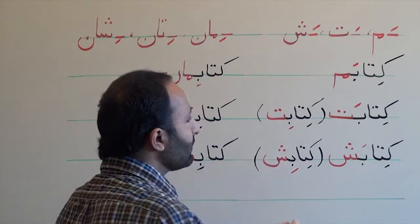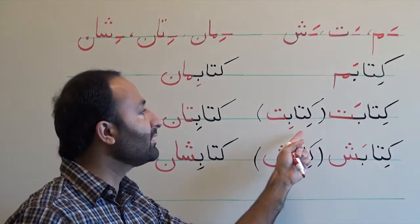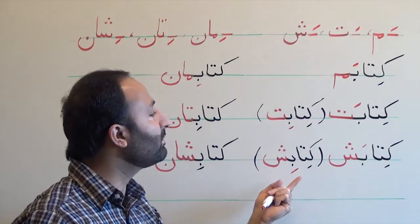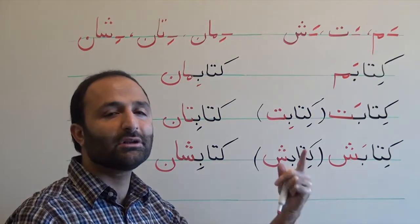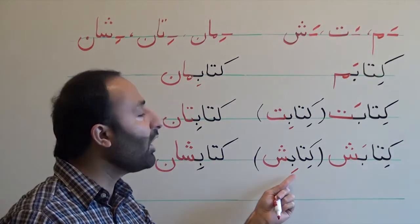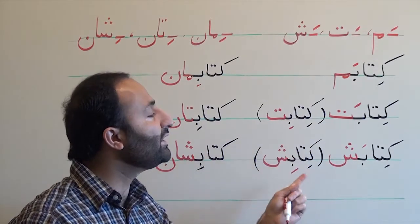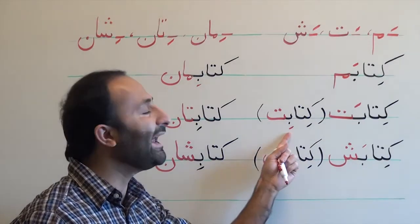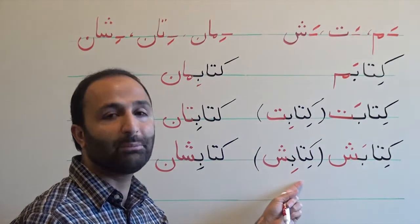So to summarize: 'ketab-at' is the written form, and 'ketab-et' is the spoken form. 'Ketab-ash' is the written form, and 'ketab-esh' is the spoken form. You will always hear the spoken forms '-esh' or '-et,' as in 'ketab-et' and 'ketab-esh.'